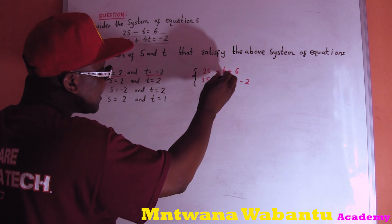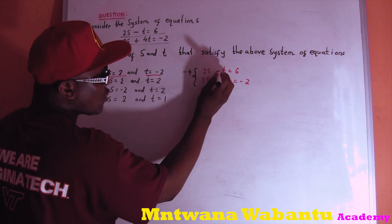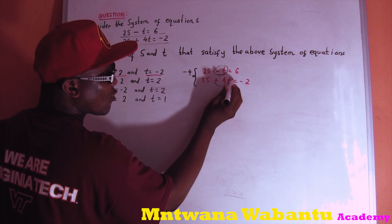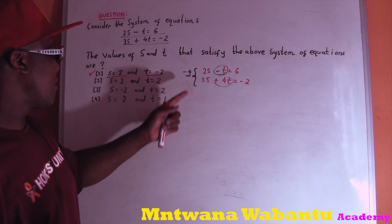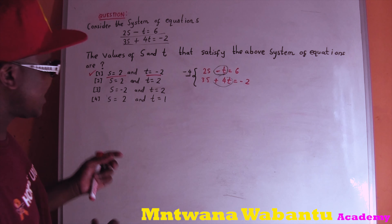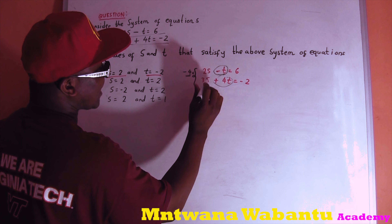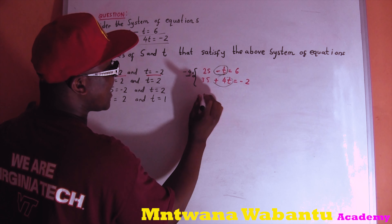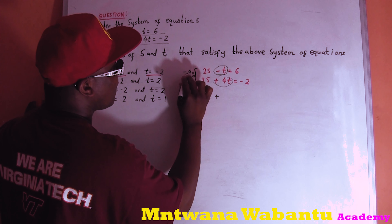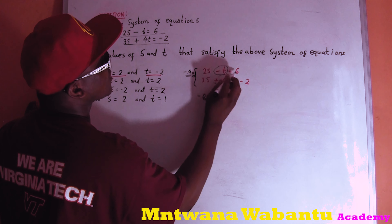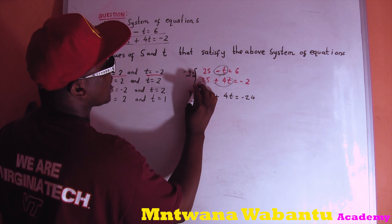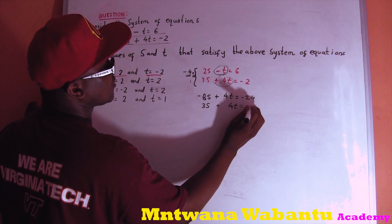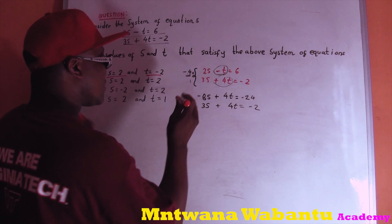The t coefficients are negative 1 and 4. To make them equal, multiply the first equation by negative 4: negative 4 times 2s gives negative 8s, and negative 4 times negative t gives positive 4t, and negative 4 times 6 gives negative 24. The second equation stays as 3s plus 4t equals negative 2.